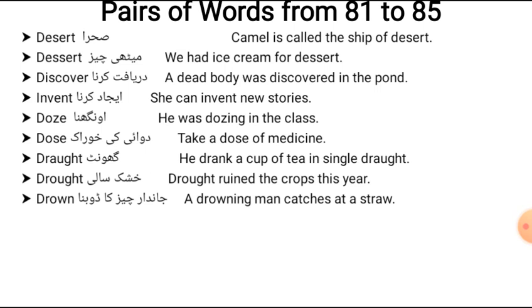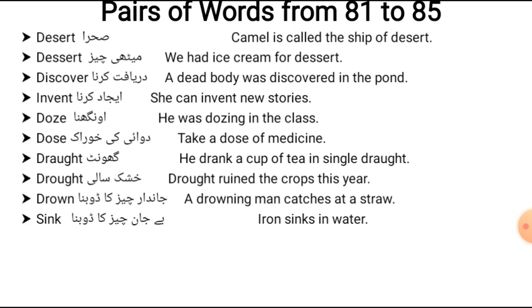Next pair: 'drown' and 'sink.' Drown refers to a living thing going under water — 'A drowning man catches at a straw.' Sink refers to a non-living thing going under water — 'Iron sinks in water.' Sink also refers to the basin we use.